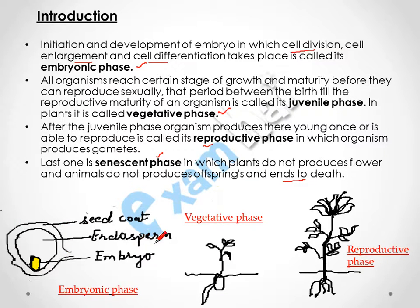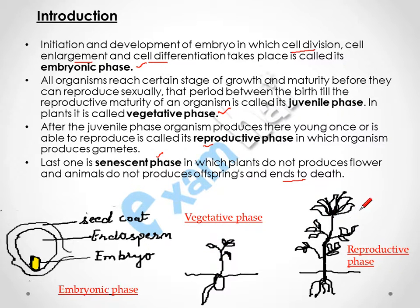After that, the plant goes into the vegetative phase in which it grows and attains certain maturity, but in this phase it is not able to produce any kind of flower. In the reproductive phase, the plant produces flowers which have male and female reproductive organs, producing male and female gametes which then fuse and produce a zygote.